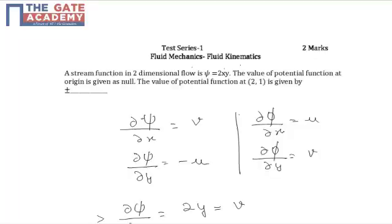To begin with this question, let us talk about the fundamental relation that exists between velocity, psi (stream function) and phi (potential function). Assuming anticlockwise direction to be positive: if u is the x-velocity and v is the y-velocity, then differentiation of psi with respect to x gives velocity in the y-direction. So del psi upon del x equals v. And del psi upon del y gives the velocity in the x-direction but with a negative sign, because moving 90 degrees anticlockwise gives minus u.